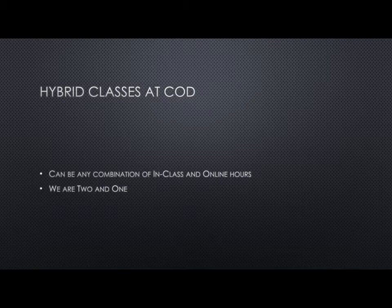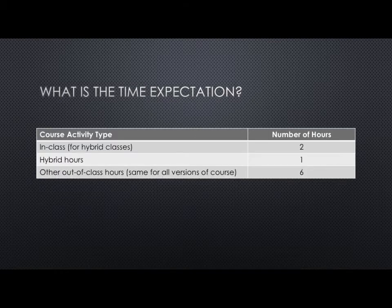It's important that you realize that this one online hour takes the place of a classroom hour, and you're also going to need to complete work outside of class in addition to this hybrid hour. The general expectation is that students should be spending two hours outside of class for every semester hour, so we're looking at a total of nine hours: two hours in class, one hybrid hour, and six hours outside of class. That ends up being the same for all formats of this course.